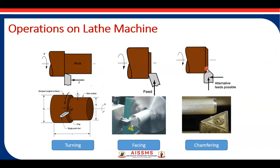The next operation is chamfering. It is used for removing the sharp corners of the workpiece. With a single-point cutting tool, we tilt the tool post at the required chamfer angle — generally 45 degrees. We then give feed simultaneously perpendicular and along the axis of the workpiece, with the axial feed being very small, around 2 to 3 mm only, to remove the sharp corners.